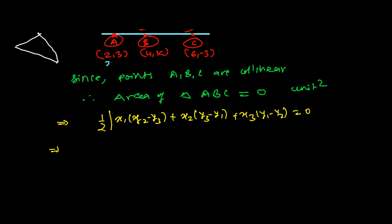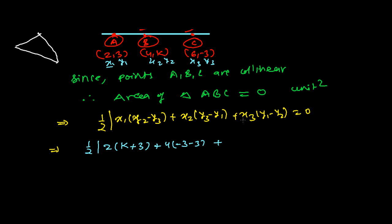Let me assign the coordinates: (2,3) is (x1,y1), (4,k) is (x2,y2), and (6,−3) is (x3,y3). So it's going to be one-half times: x1 is 2, multiplied by (y2 − y3) which is k − (−3), giving k + 3. Then x2 is 4, multiplied by (y3 − y1) which is −3 − 3 = −6. Then x3 is 6, multiplied by (y1 − y2) which is 3 − k.